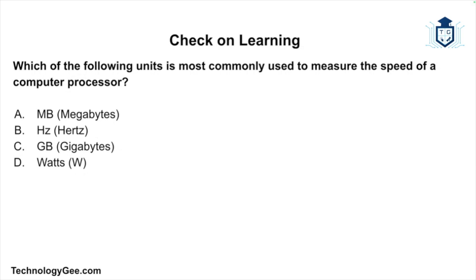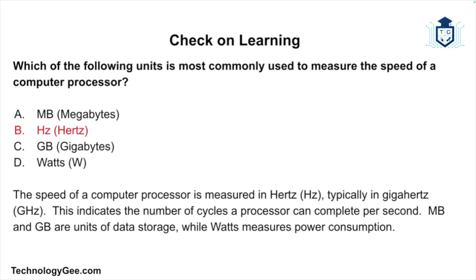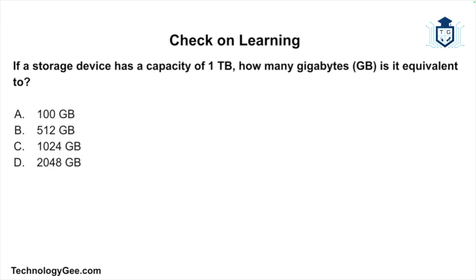Now it's time for our check on learning. Question one: which of the following units is most commonly used to measure the speed of a computer processor — A) megabytes, B) hertz, C) gigabytes, or D) watts? The correct answer is hertz. The speed of a computer processor is measured in hertz, typically in gigahertz, indicating the number of cycles a processor can complete per second. Megabytes and gigabytes are units of data storage, while watts measures power consumption.